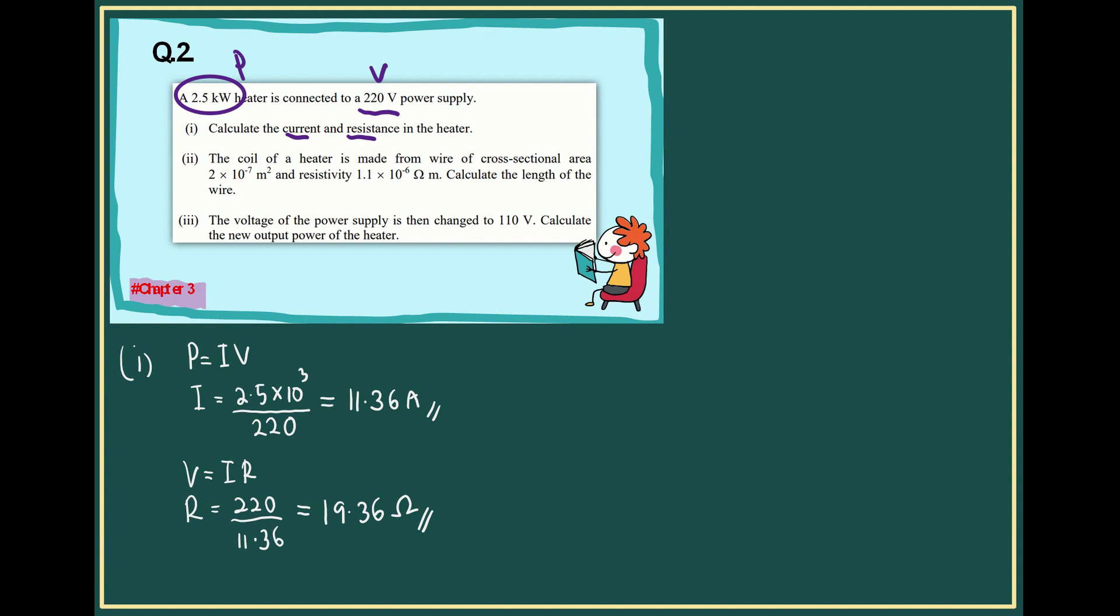is: the coil of the heater is made from wire of cross-sectional area and resistivity rho. Calculate the length of the wire. To solve number two,